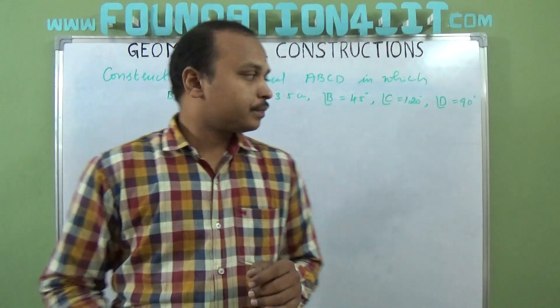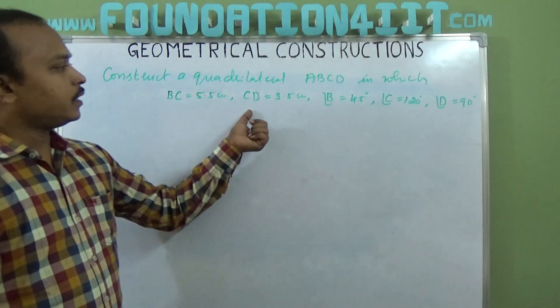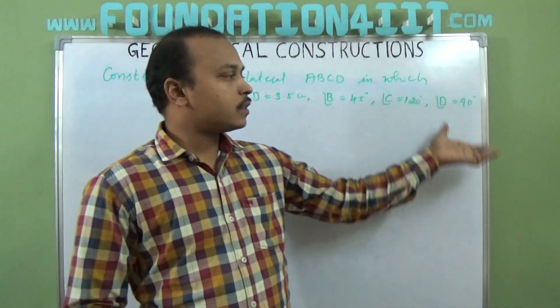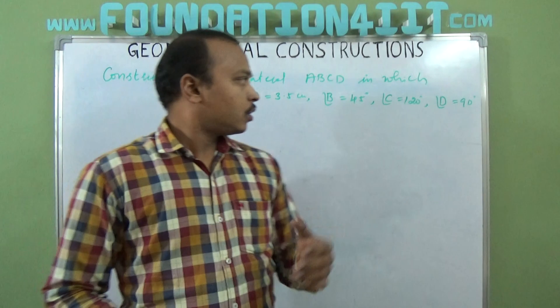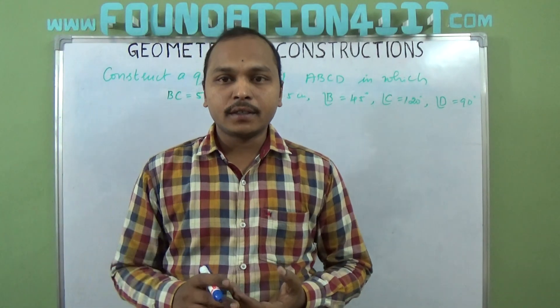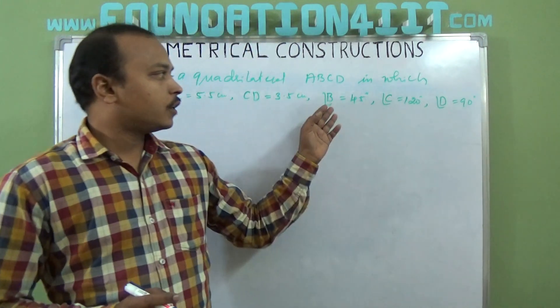I have written the question here. BC and CD are two adjacent sides, and angle B, angle C, and angle D are given. So if you know B, C, D, you can find out angle A also because the sum of the angles in a quadrilateral is 360 degrees.